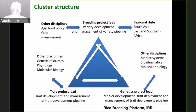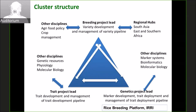Within the cluster, it is structured somewhat like the private sector. There has to be a breeding project lead — the varietal development person. Then there are regional hubs in South Asia, Southeast Asia, and Africa. Then there is a genetics project lead, a traits project lead, and collaboration with other institutes is also integrated into this structure.